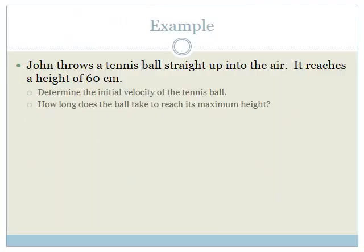Let's look at another example. John throws a tennis ball straight up into the air and it reaches a height of 60 centimeters. We need to read through this and check what information we're given. We're told that the height is 60 centimeters — but that is not an SI unit. The SI unit for displacement is meters, so we need to divide by 100, giving us 0.6 meters.